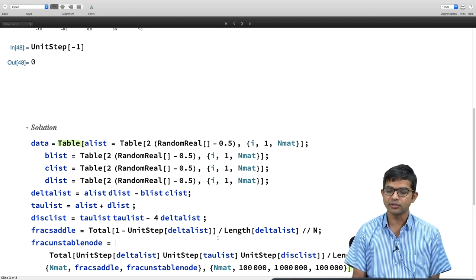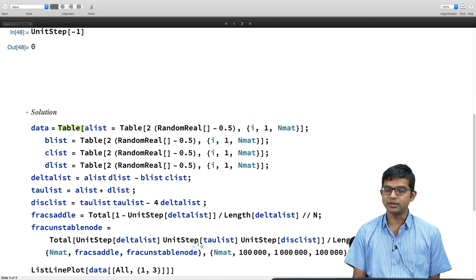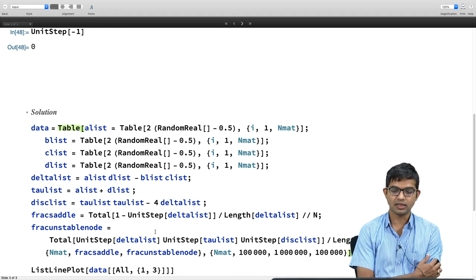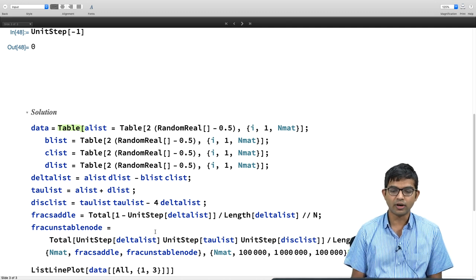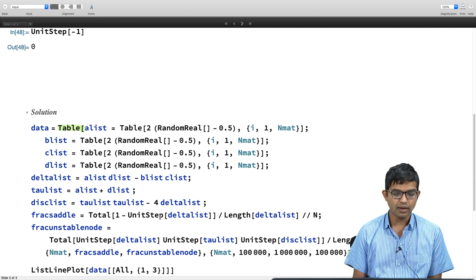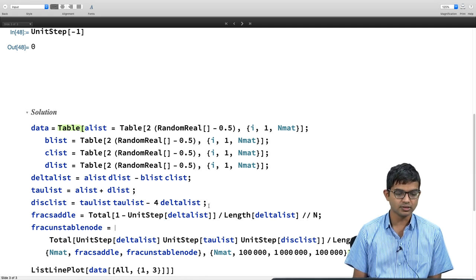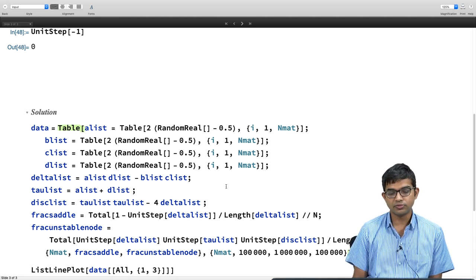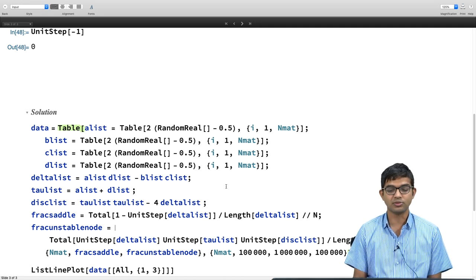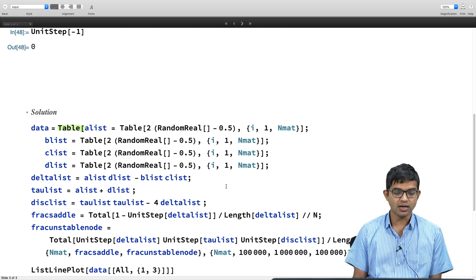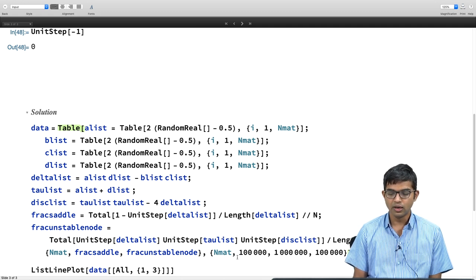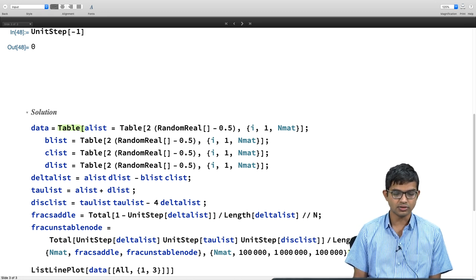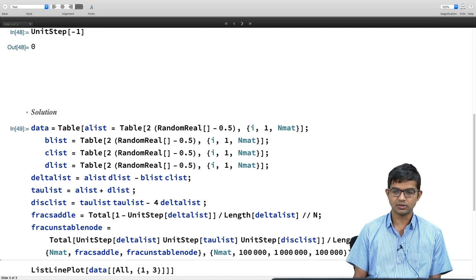If you were to write this type of code in some other language, surely you will have to spend many more lines. And it is very nice, very convenient for quick calculations. And you can do even big numbers. I am computing only these 2 quantities, but I will allow you guys to play with, improvise on this code and get fraction of, it should be the same as fraction of unstable nodes. There is some symmetry in the problem. Let us look at what happens here. I am going to run my n mat all the way from 100,000 up to 1 million in steps of 100,000. And then I will finally plot all of this. I am going to run this. Then I have list line plot.